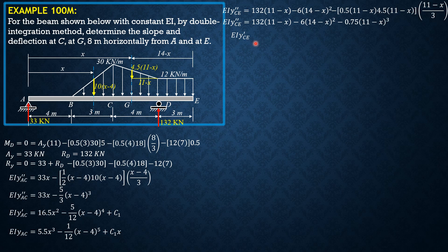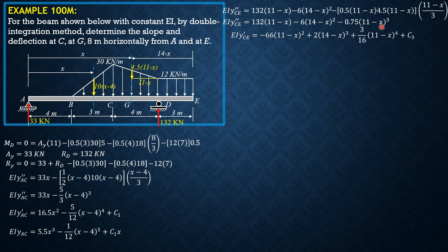Integrating once: EI Y' CE equals negative 66(11 minus X)² divided by negative 1, plus (2/3)(14 minus X)³, plus (3/16)(11 minus X)⁴ plus C₃. Note that when integrating terms with (11 minus X), the differential is negative dX, so signs adjust accordingly, yielding the positive (3/16)(11 minus X)⁴ term.